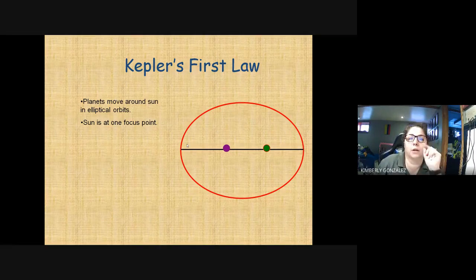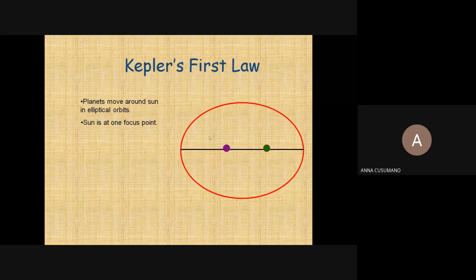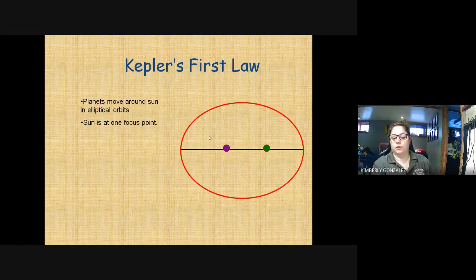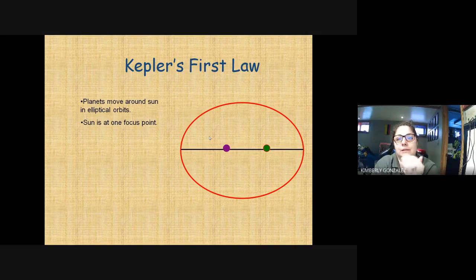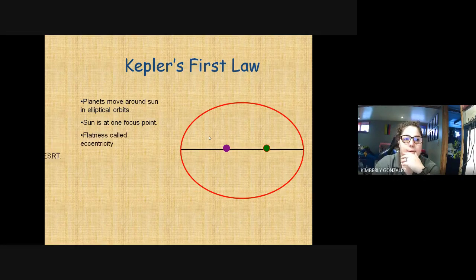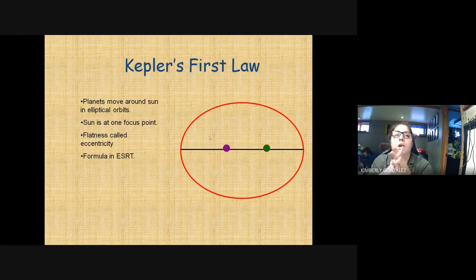If we're closest to the sun, which season are we in? Winter. And during winter, which way are we tilted? We're tilted away from the sun. So during winter we're tilted away from the sun because the tilt of the axis is the only thing that changes the seasons — it doesn't matter how close or far we are from the sun.